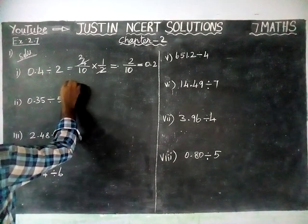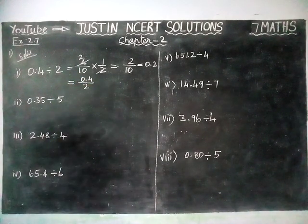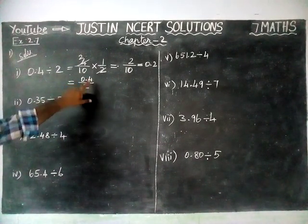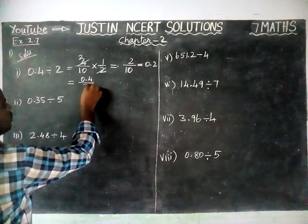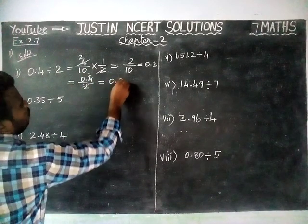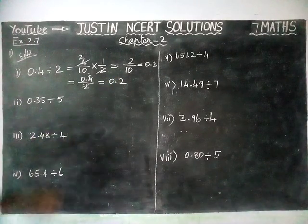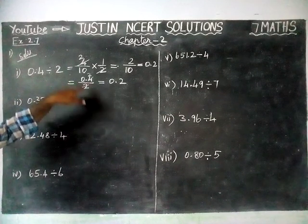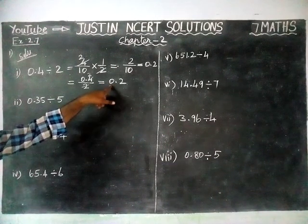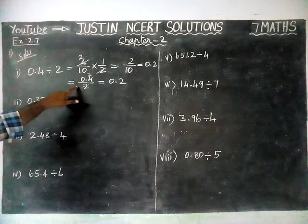Second method: 0.4 divided by 2. Forget about the decimal point — just think of this as the number 4. Divide 4 by 2: 2 twos are 4, giving 2. There is one decimal point in 0.4, so we place one decimal point in the answer: 0.2. For the remaining questions, we are going to follow the second method.